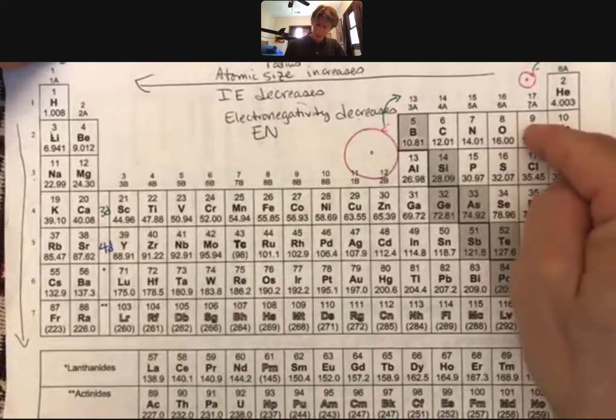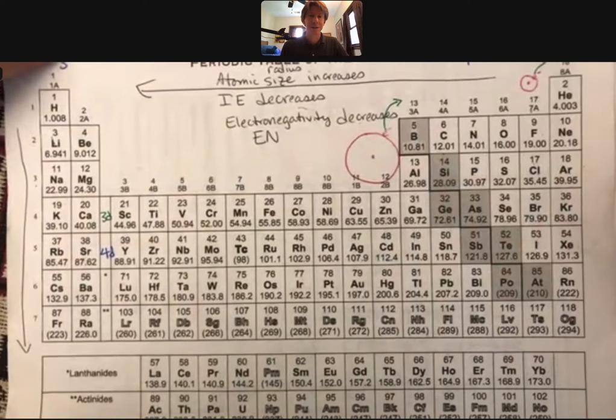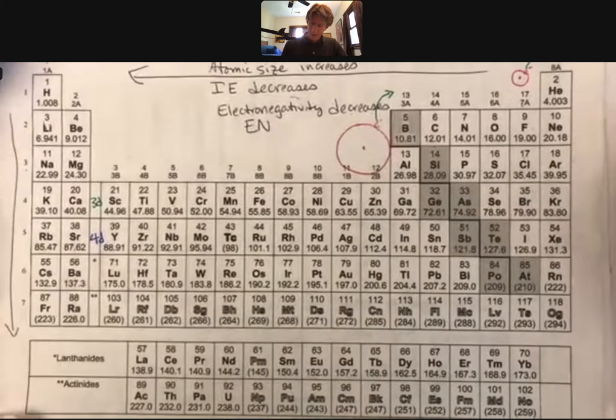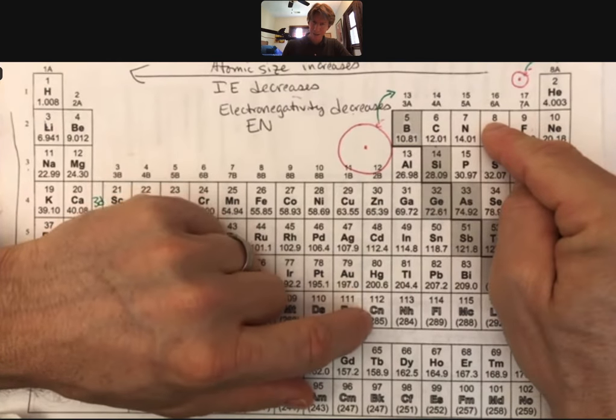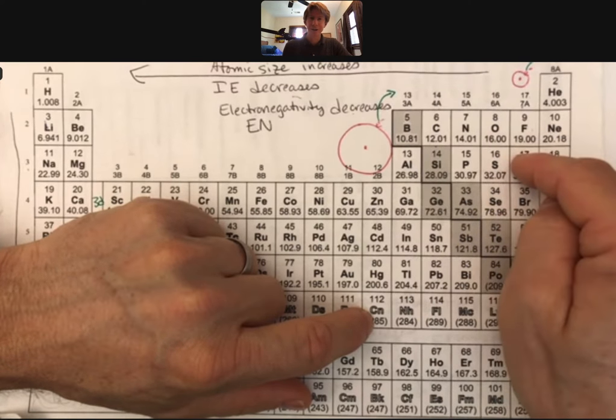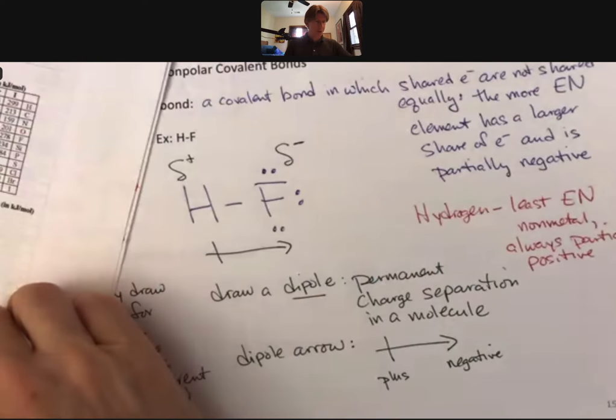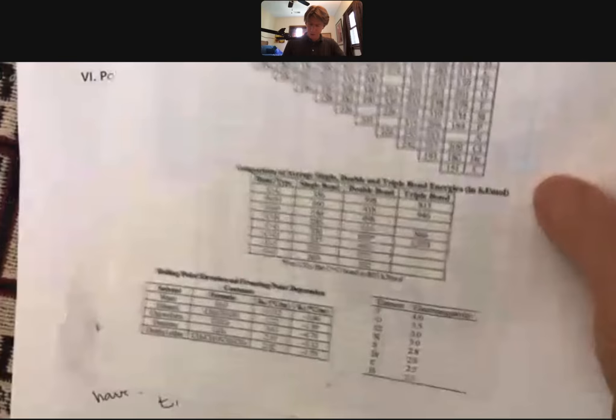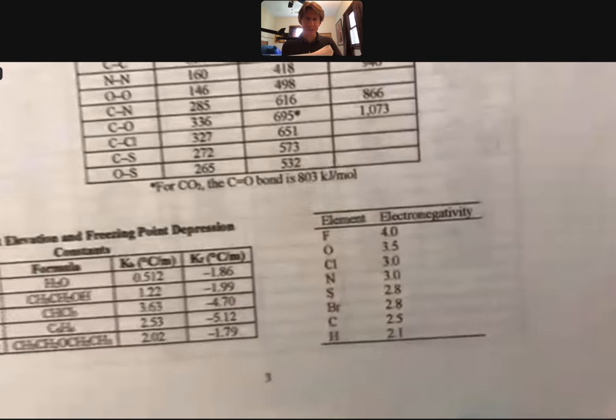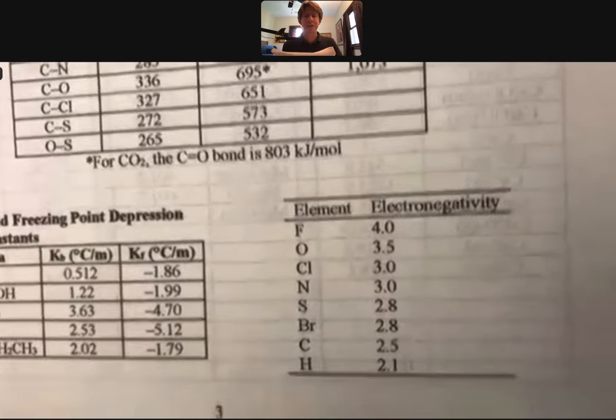If you're playing along at home, for electronegativity, as you go to the left and as you go down, electronegativity gets smaller or it decreases. As you go from fluorine to oxygen it decreases. Oxygen to sulfur, it decreases. Now oxygen and chlorine, they're diagonal from each other so it might be hard to tell. However, on your conversion and equation sheets, if you go to the third page, you should find an electronegativity score sheet.